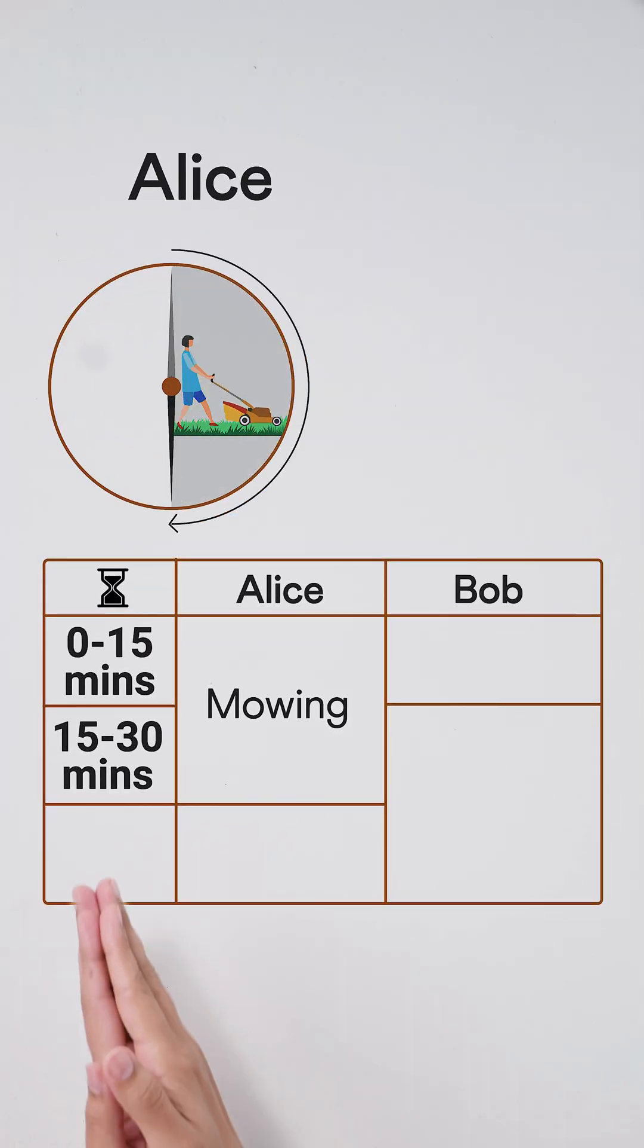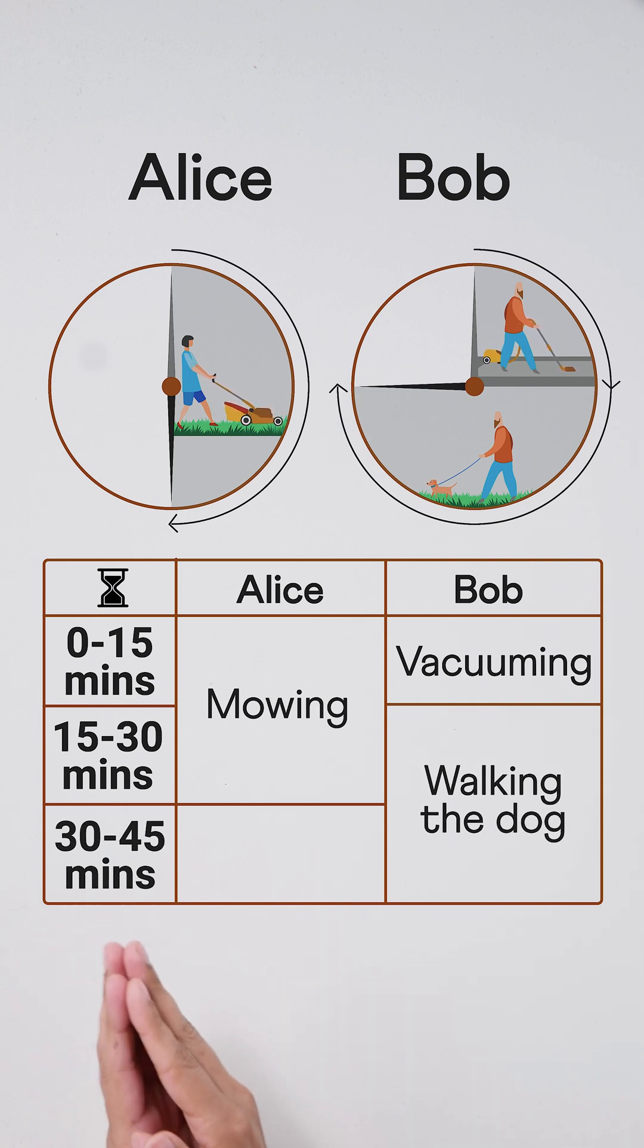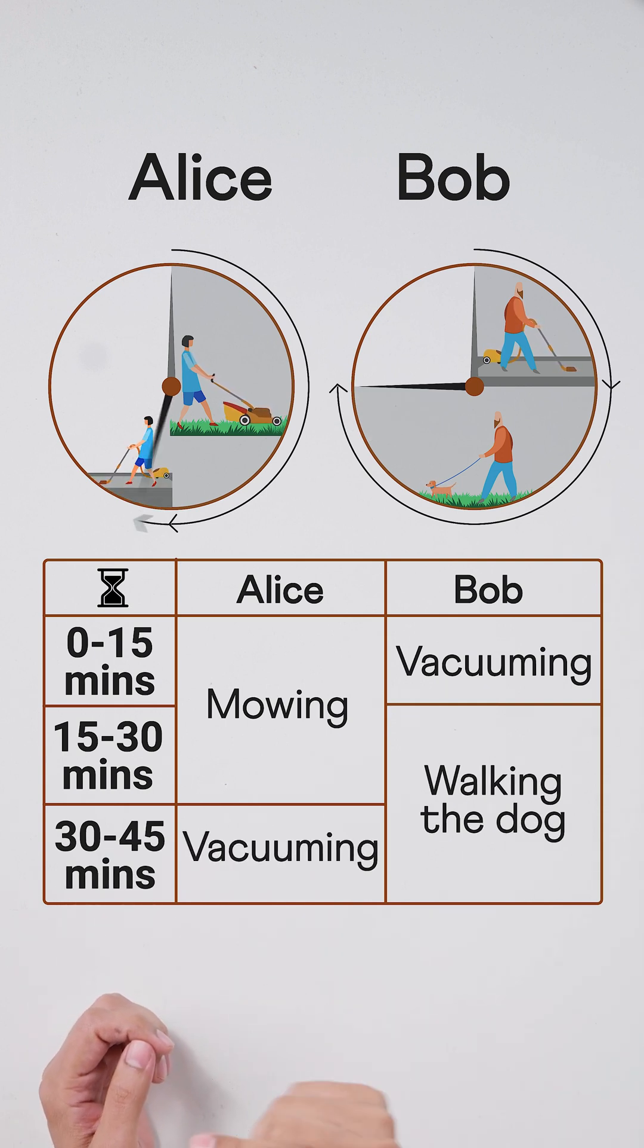Alice mows the lawn for the first 30 minutes. But Bob vacuums the floor for only the first 15 minutes and then walks the dog for the next 30 minutes. And Alice, after mowing the lawn, can finish vacuuming in another 15 minutes.